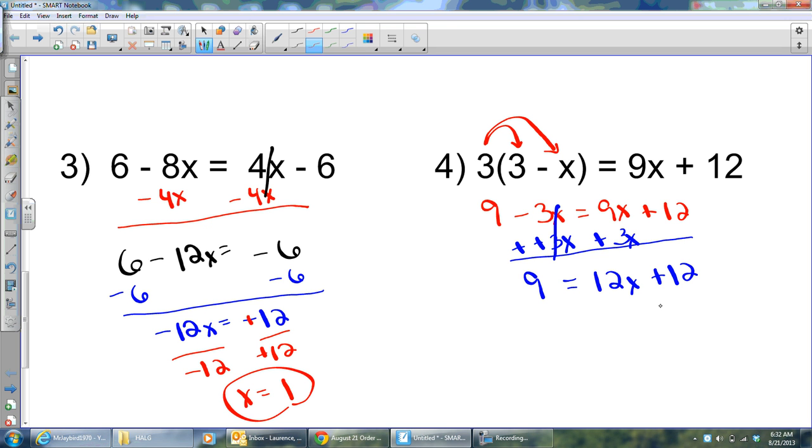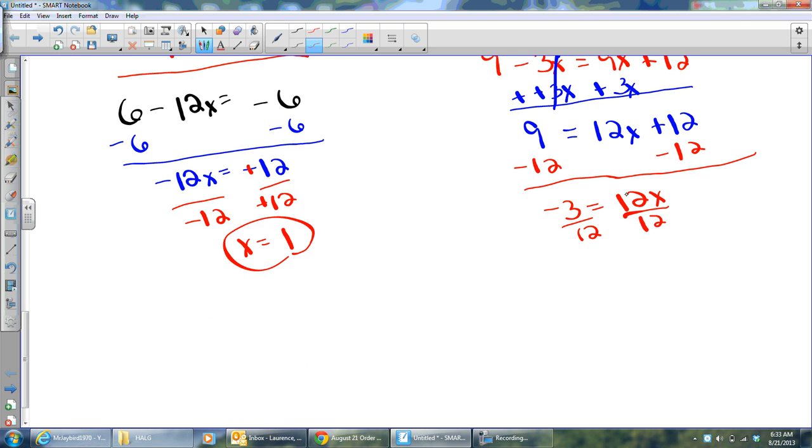Now, I have a two-step equation. So, I'll get rid of the addition first. Leaving me with negative 3 equals 12x. Then, I'll divide by 12 on both sides. And I'll simplify my fraction. And I'll get negative 1 fourth when I simplify that. And there you go.